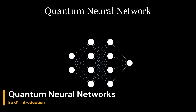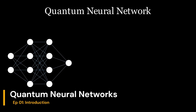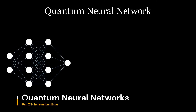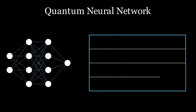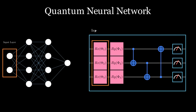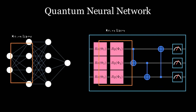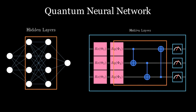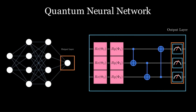This is the familiar-looking Artificial Neural Network. Let's keep it aside and pull up a 3-qubit quantum neural network for a direct comparison. Just like an Artificial Neural Network, a quantum neural network has an input layer, hidden layers for processing, and an output layer. Let's study each of them in detail.